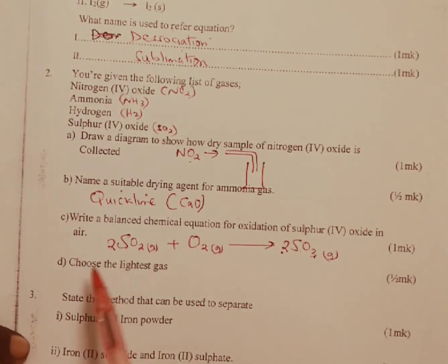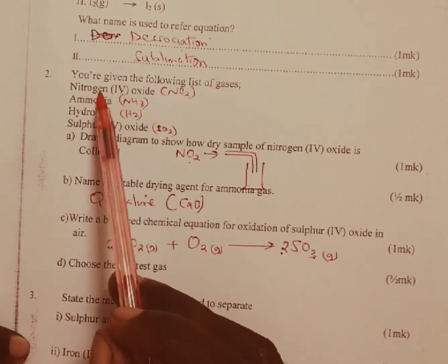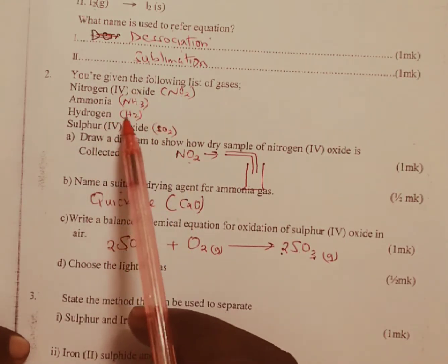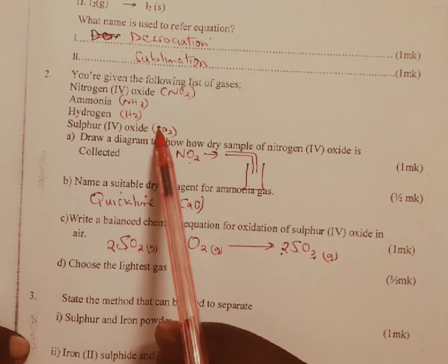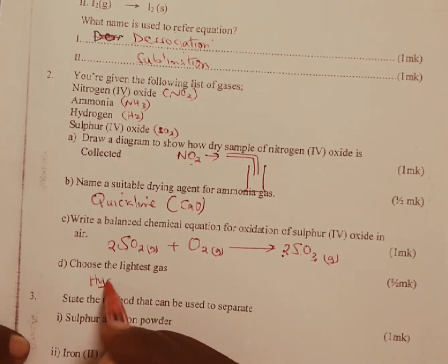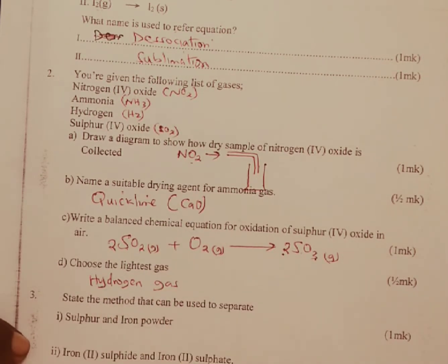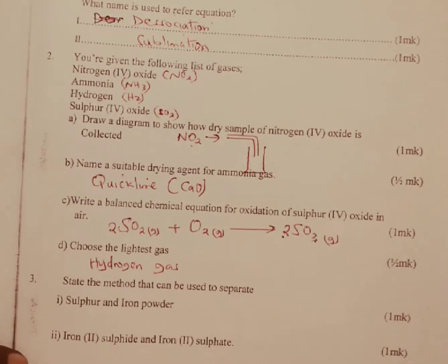Part D: choose the lightest gas. From the list we have nitrogen 4 oxide, ammonia, hydrogen, and sulfur 4 oxide. Hydrogen gas is the lightest.